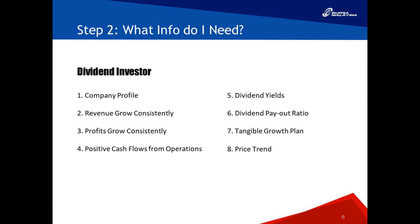As a dividend investor, I want my income to grow — quarter to quarter or year to year. To achieve that, criteria two, three, and four are critical: sales (revenue) must grow consistently, profits must also grow consistently, and you need positive cash flow. No cash, no dividends — that's why you need to look at cash flow. For growth investors, positive cash flow is also important because you need cash to finance future investments.